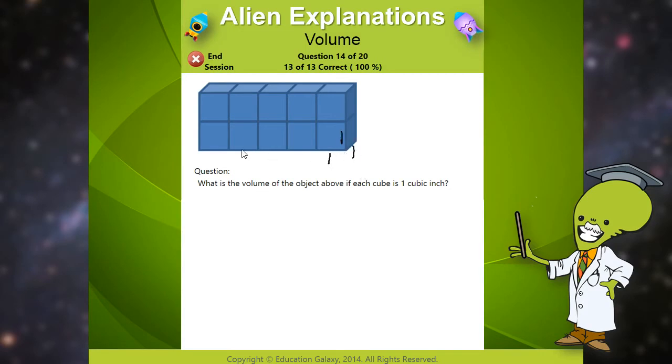So let's see how long the entire object is. It's one, one, one, one, and one. So the length would be one, two, three, four, five.